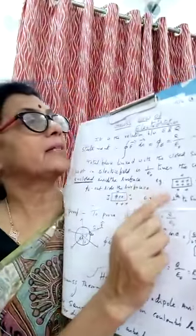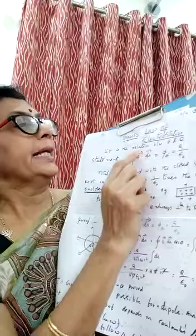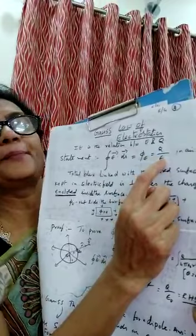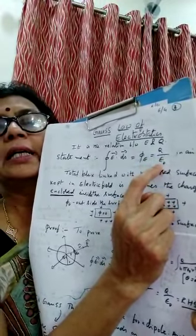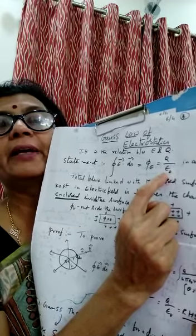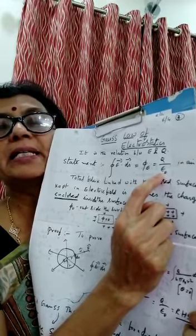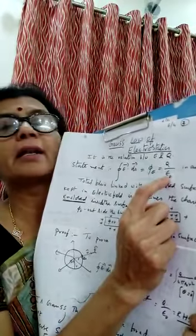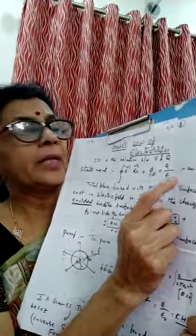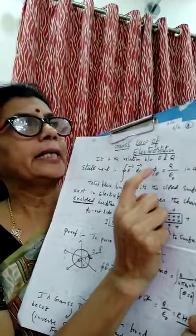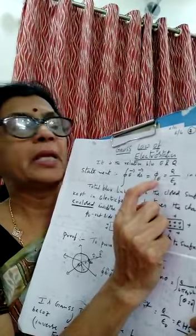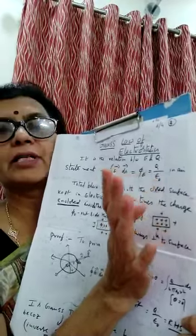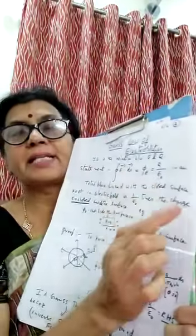What is the mathematical form of Gauss Theorem? ∮ E · ds = φ_e = q / ε₀, where ε₀ is the electrical permittivity of air or free space. That means you have to keep the charge or surface only in air or free space, then only this law holds good. If it is kept in a medium, then the formula becomes q / (k ε₀), where k is the dielectric constant of the medium.